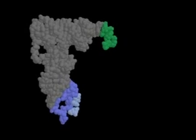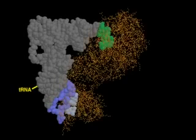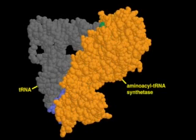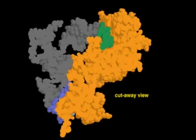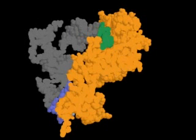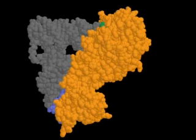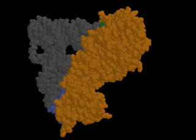The charging of tRNAs with the correct amino acids is carried out by aminoacyl tRNA synthetases. As revealed in the cutaway view, the complex of phenylalanine tRNA with its cognate synthetase shows an extensive contact surface that includes recognition sites for the anticodon base triplet. The tRNA's CCA end is deeply buried in the enzyme.